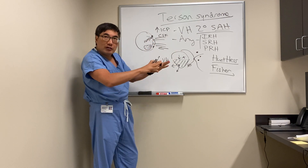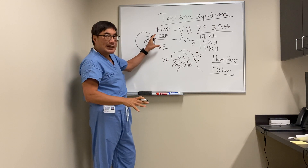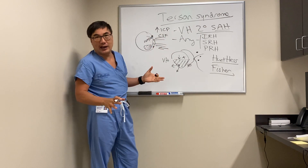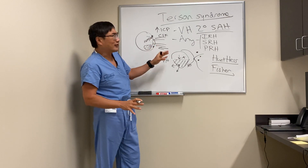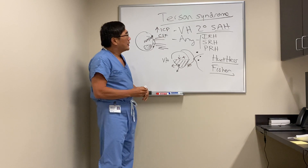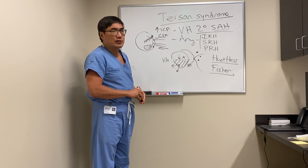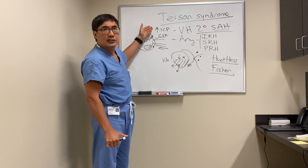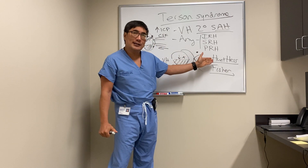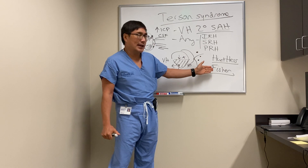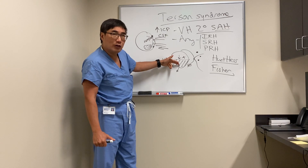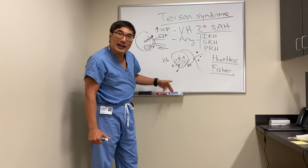Whether the hemorrhage is intraretinal, subretinal, preretinal, or vitreous depends on local vascular anatomy and the height and speed of the pressure rise, so we can't predict intracranial pressure just by the type of hemorrhage seen. In summary, Terson syndrome is intraocular hemorrhage related to subarachnoid hemorrhage, probably caused by increased ICP. It correlates with Hunt-Hess clinical criteria and Fisher grade on CT, and we can treat it with YAG laser if it's a preretinal hemorrhage blocking the macula — making a hole in the bottom of the boat and letting the blood out.